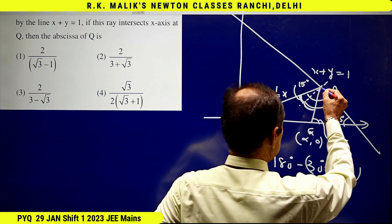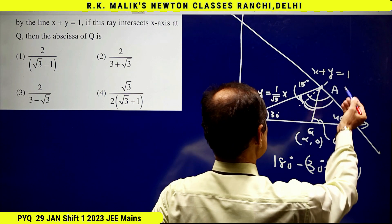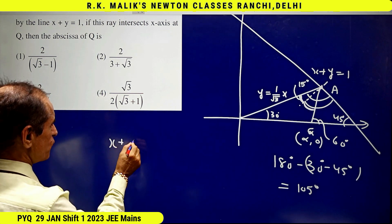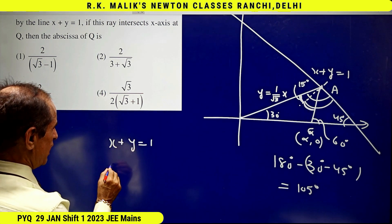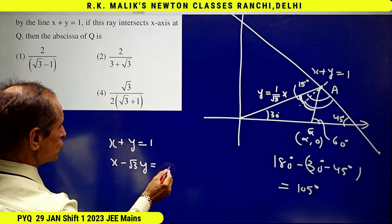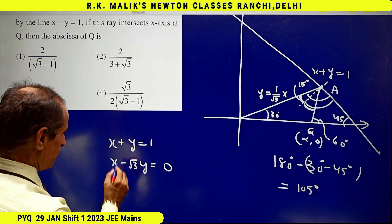It is very easy to find the coordinate of this point. By solving these two lines, I can get the coordinate of point A. The lines are x + y = 1 and x - √3y = 0.